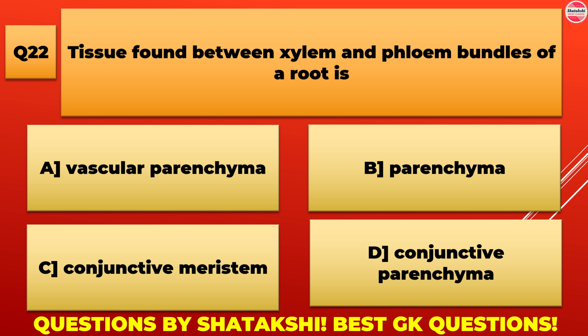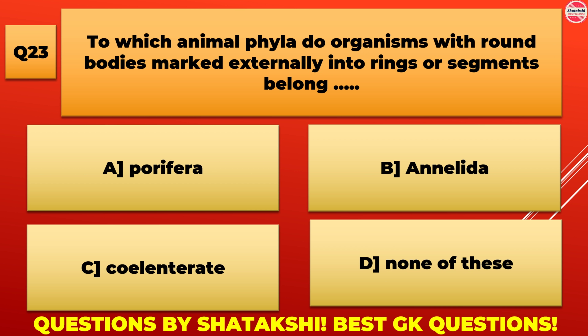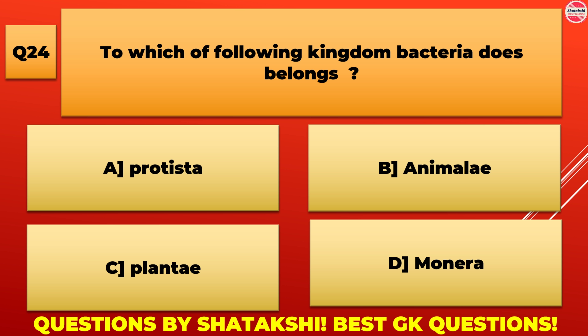To which animal phyla do organisms with round bodies marked externally into rings or segments belong? A. Porifera, B. Annelida, C. Nematoda, D. None of these. B. Annelida is the correct answer.